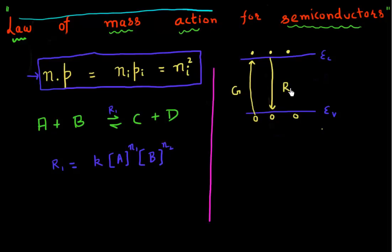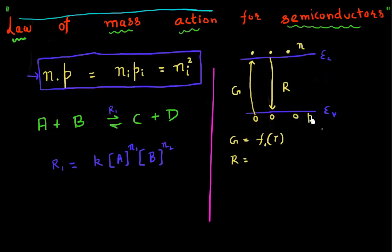These are two opposing processes happening in a semiconductor. The rate of generation essentially just depends upon the temperature, because you have sufficient numbers of electrons in the valence band, and if the temperature is high enough they can become conduction band electrons. So this rate is just a function of temperature. The recombination rate, on the other hand, depends upon the number of electrons and the number of holes. The more electrons and holes you have, the higher the likelihood that they recombine. So this recombination rate is given by a formula that is a function of temperature and also depends upon the product of electrons and holes.